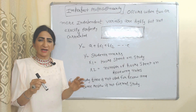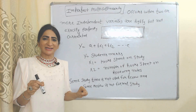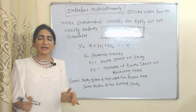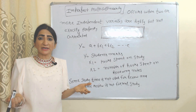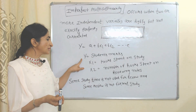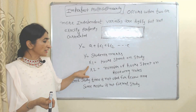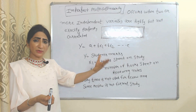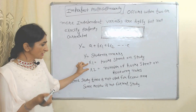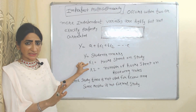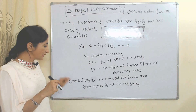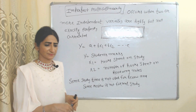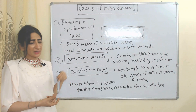Imperfect multicollinearity occurs when two or more independent variables are highly correlated but not perfectly and exactly correlated. For example, student marks is the dependent variable. X1 is time spent on study and X2 is number of hours spent reviewing notes. These two independent variables are highly correlated but not perfectly so — it is possible that some study time is not used for review, and some reviews are not formal study.